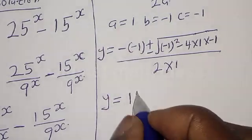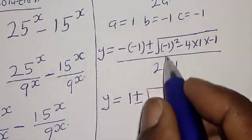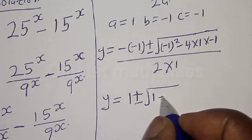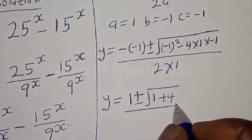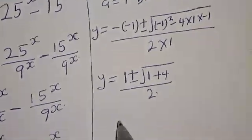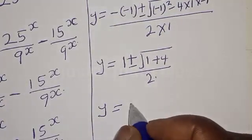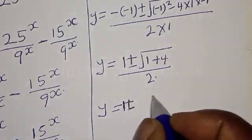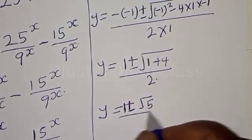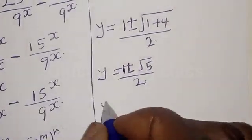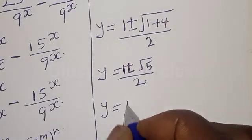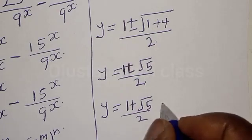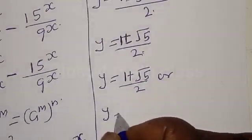Then we have y is equal to 1 plus or minus square root of 1 minus 4 times 1 times minus 1, which is plus 4, over 2. Then we have y is equal to 1 plus or minus square root of 5, divided by 2.